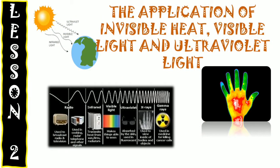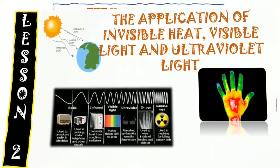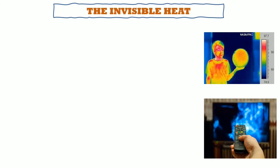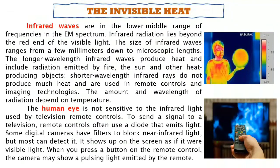Next, we have lesson 2, which covers the application of invisible heat, visible light, and ultraviolet light. We begin with invisible heat, or infrared radiation. Infrared waves are in the lower middle range of frequencies in the electromagnetic spectrum. Infrared radiation lies beyond the red end of visible light, and the size of infrared waves ranges from a few millimeters down to microscopic lengths.